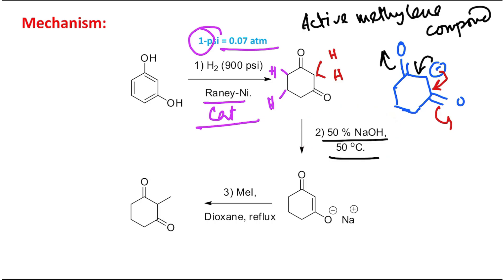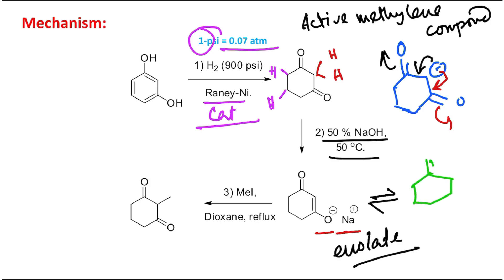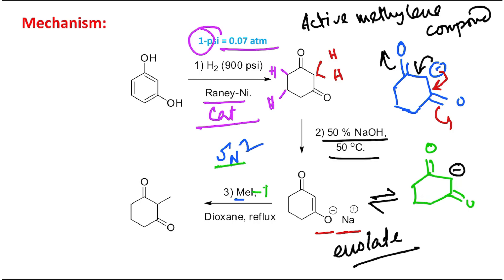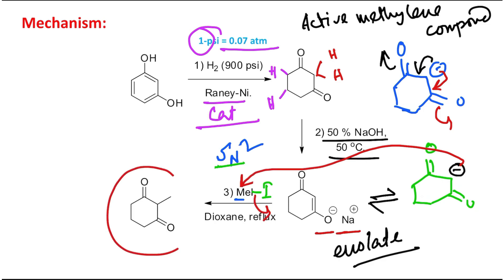The deprotonated species is produced; the negative charge can remain on oxygen as an enolate with sodium as counter cation, or through keto-enol tautomerism it forms a carbanion. The tautomer is the carbanion, and carbanions are nucleophilic - they are softer in nature. The electrophile here is methyl iodide, which is an excellent reagent for SN2 reaction: iodide is a good leaving group and methyl is very unhindered. The carbanion attacks methyl iodide, iodide leaves, and the methylated product is produced.